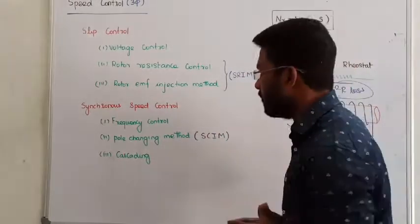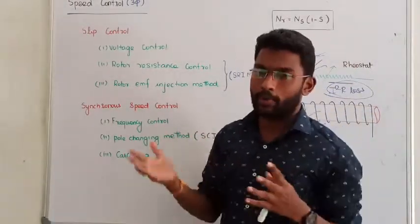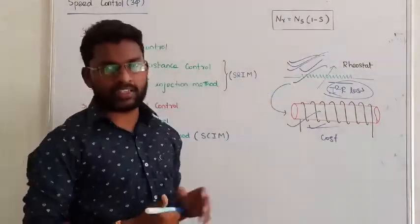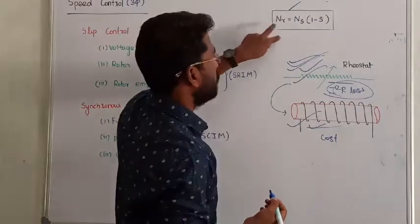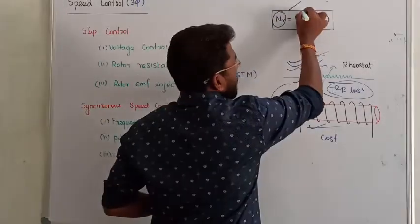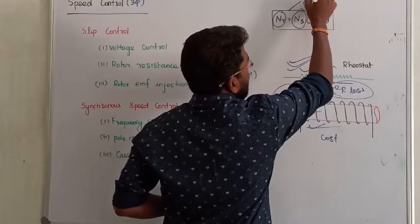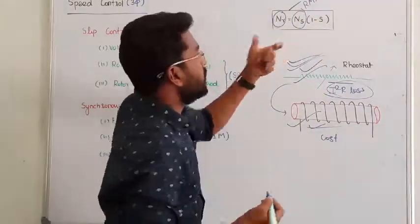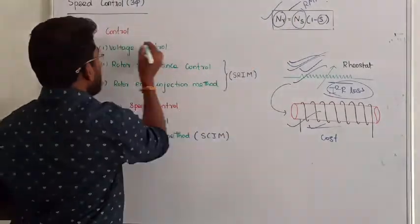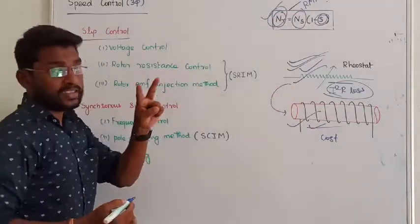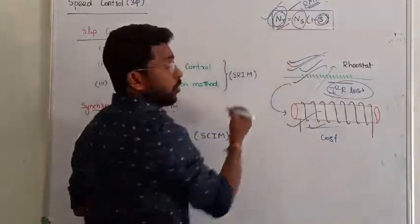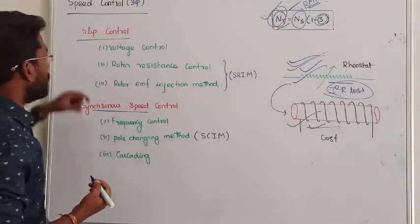There are two effective methods. First, I am looking at the rotor speed. For a three-phase induction motor, the rotor speed can be written as Ns into (1 minus s). To control the rotor speed, either we can control the synchronous speed — that is, the rotating magnetic field speed — or we can control the slip. These are the two effective methods to control the speed.